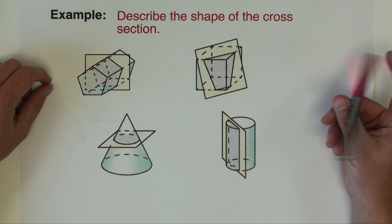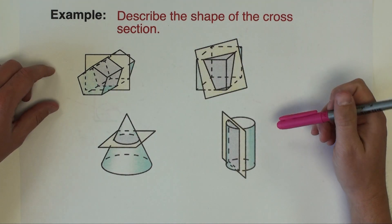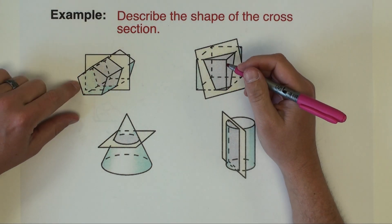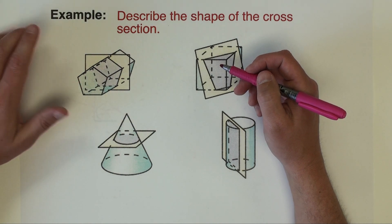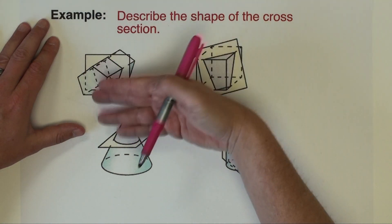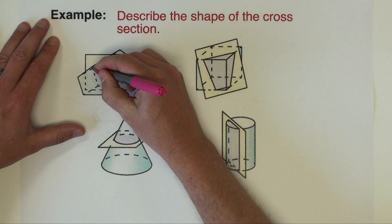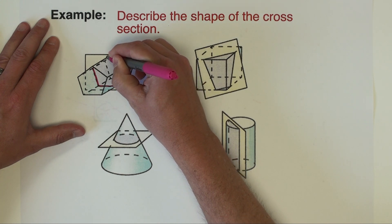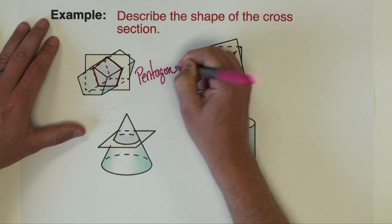All right let's do the best we can on this slide to see these slices, to see these cross sections. So the directions say describe the shape of the cross section. So let's start in the top left corner we've got this prism. If you look closely you can see that the bases are shaped like pentagons and we're just taking a slice like straight down the top right through prism. And so the slice that I see right here is shaped just like the bases. The slice of that is a pentagon.